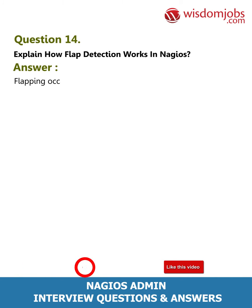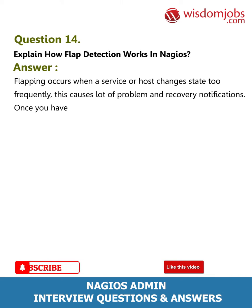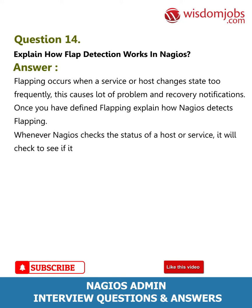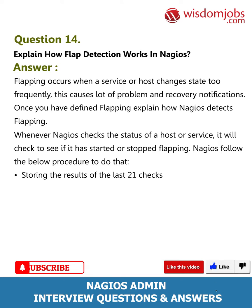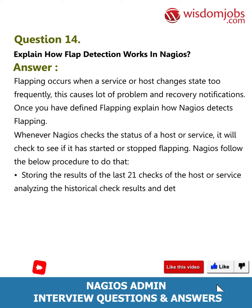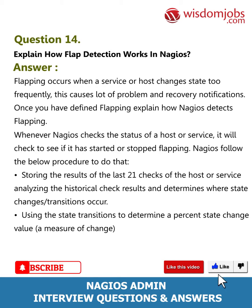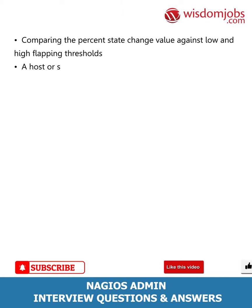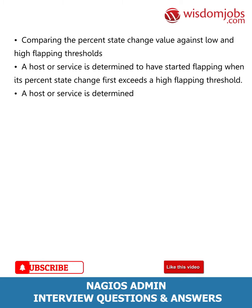Question 14: Explain how flap detection works in Nagios. Answer: Flapping occurs when a service or host changes state too frequently, causing a lot of problem and recovery notifications. Nagios detects flapping by: storing the results of the last 21 checks of the host or service; analyzing the historical check results and determining where state changes or transitions occur; using the state transitions to determine a percent state change value; and comparing the percent state change value against low and high flapping thresholds. A host or service is determined to have started flapping when its percent state change first exceeds a high flapping threshold, and stopped flapping when it goes below a low flapping threshold.